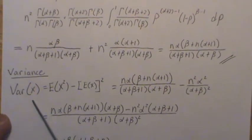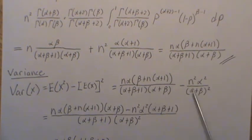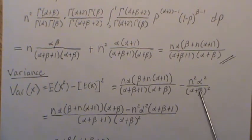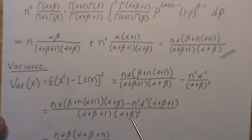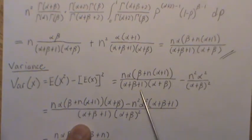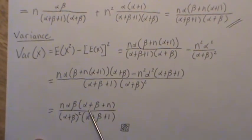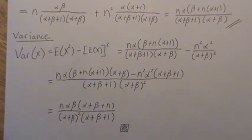The variance is the expected value of X squared minus the mean squared. Taking the second moment and subtracting the mean squared, we find a common denominator — multiplying the first piece by (alpha plus beta) and the second piece by (alpha plus beta plus 1). The numerator reduces accordingly, the denominator remains the same, and that's the variance of a beta binomial distribution.